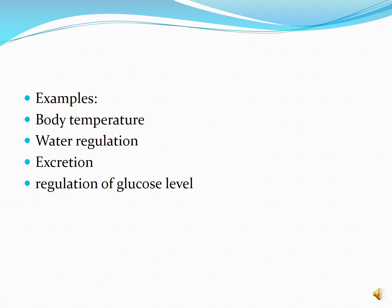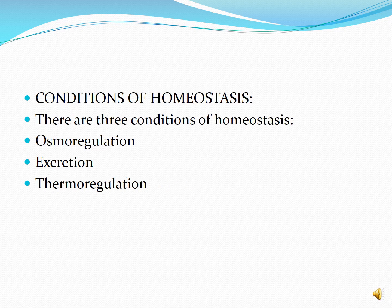Another example of homeostasis is the balance of glucose levels in the body. The body must maintain a proper glucose level to ensure a person remains healthy. When glucose levels get too high, the pancreas releases the hormone insulin, which works to keep glucose levels in the normal range. If blood glucose levels drop too low, the liver converts glycogen back into glucose, raising the level again.